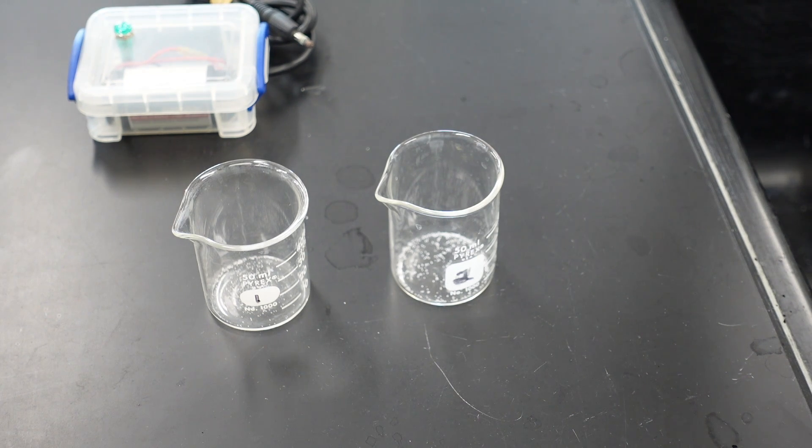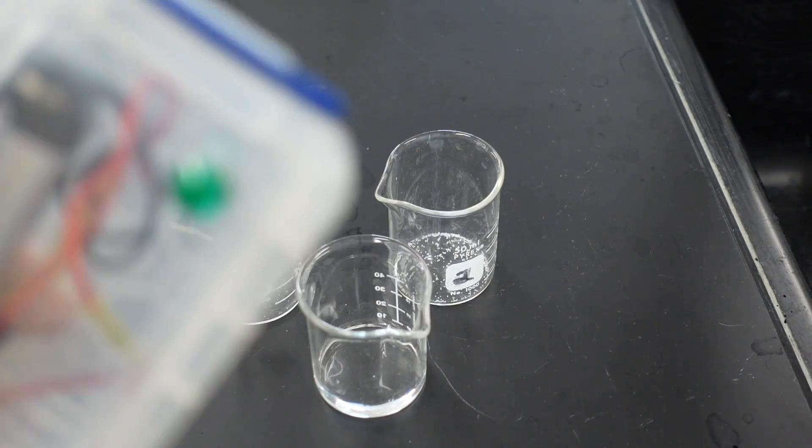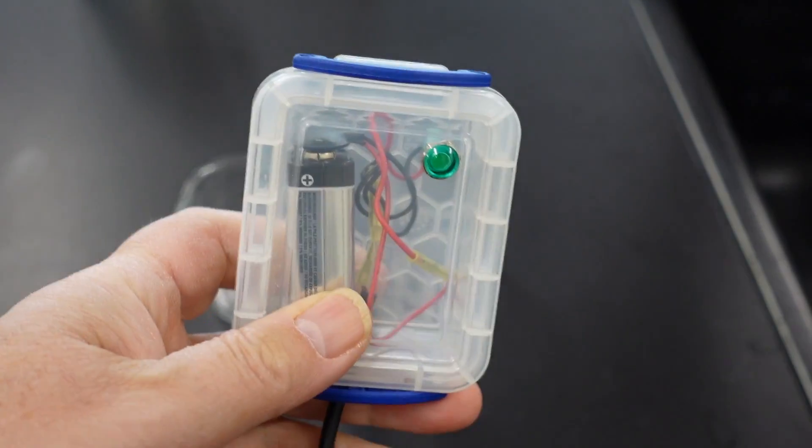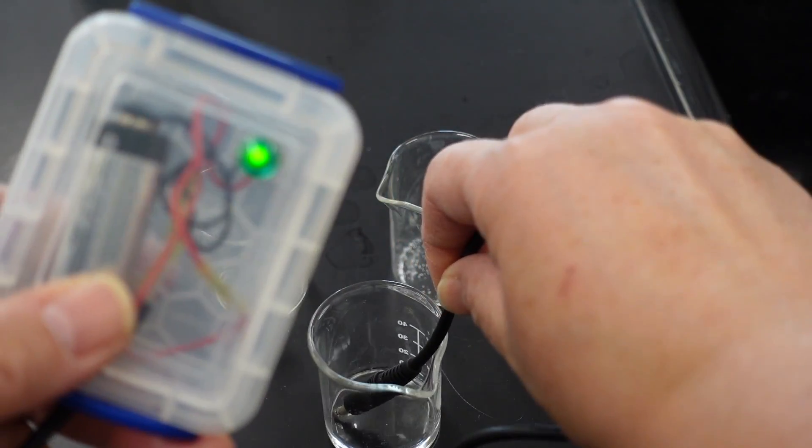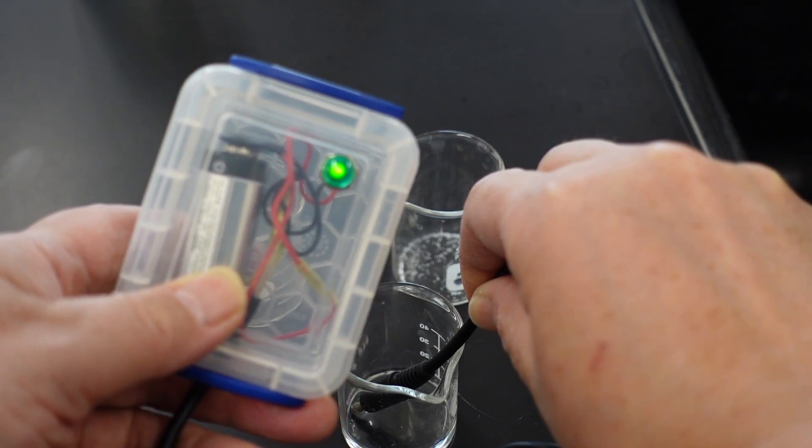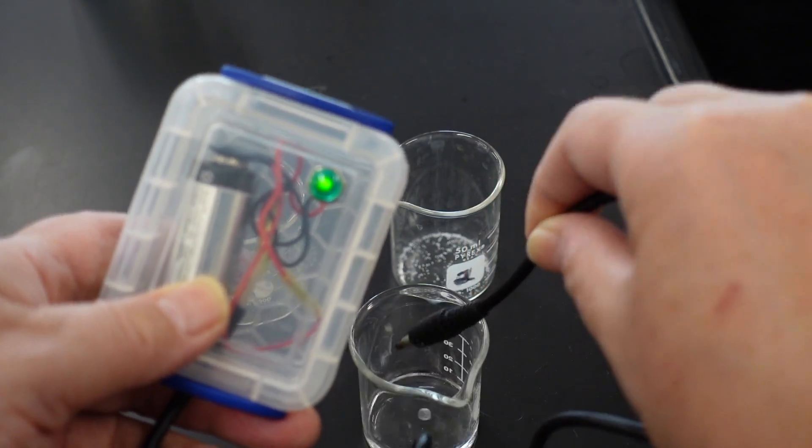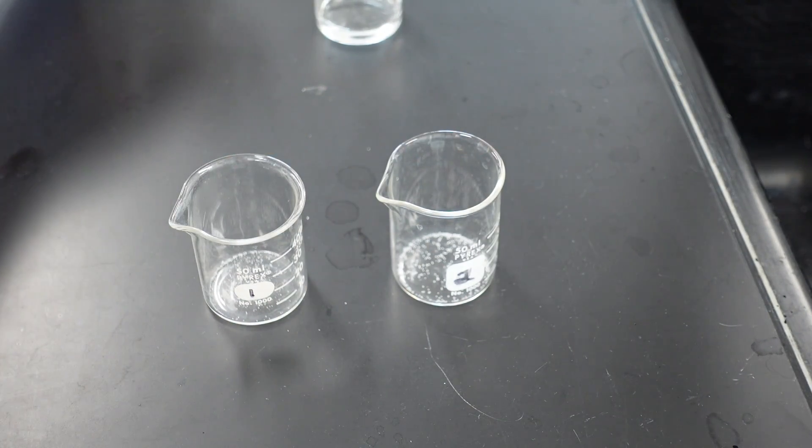And now we are going to test their conductivities. But first, let's see what the conductivity of distilled water is without having anything dissolved in it. The conductivity tester's light will glow if it conducts electricity. If it only glows a little bit, then it's a poor conductor of electricity. If it glows brightly, then it's a strong conductor of electricity. That would be a dim glow. So that's what you would expect from a poor conductor.